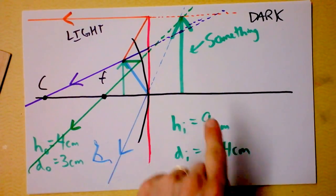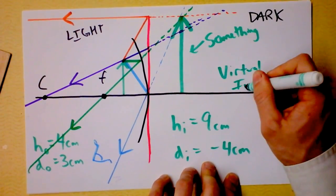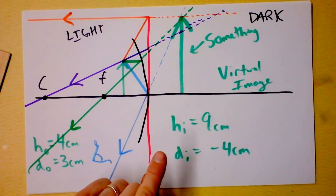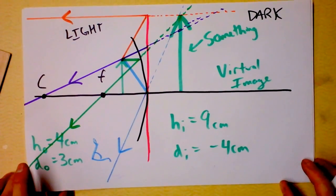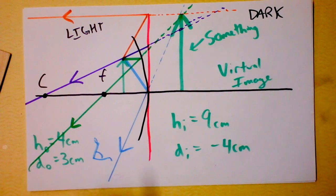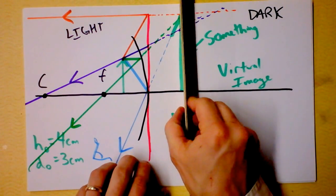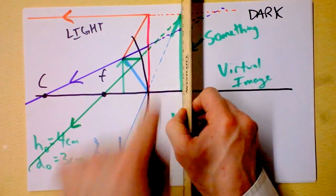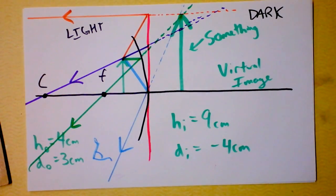What we've got here is not real — it's a virtual image. Two properties of virtual images: one, it's upright; two, it's on the wrong side of the mirror. There's nothing there. If I put a piece of paper right there, I would not see anything because there's no light there — it's darkness. We're going to do some convex mirrors next. They're a lot easier.